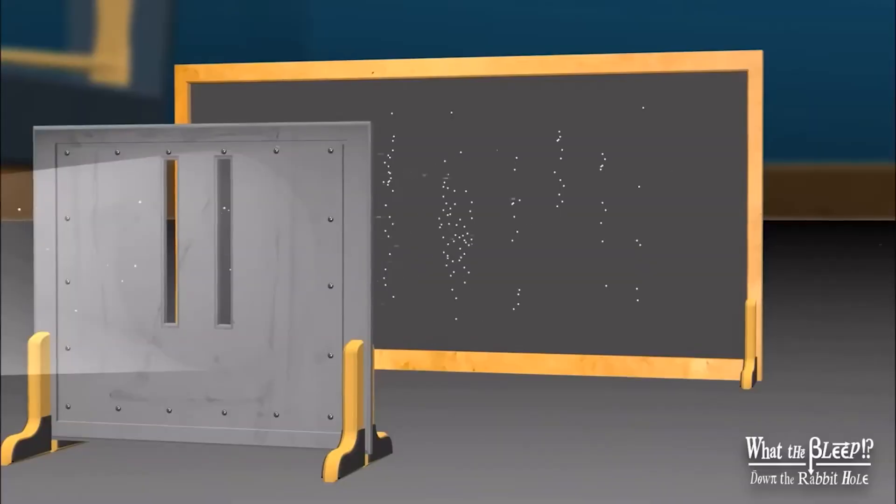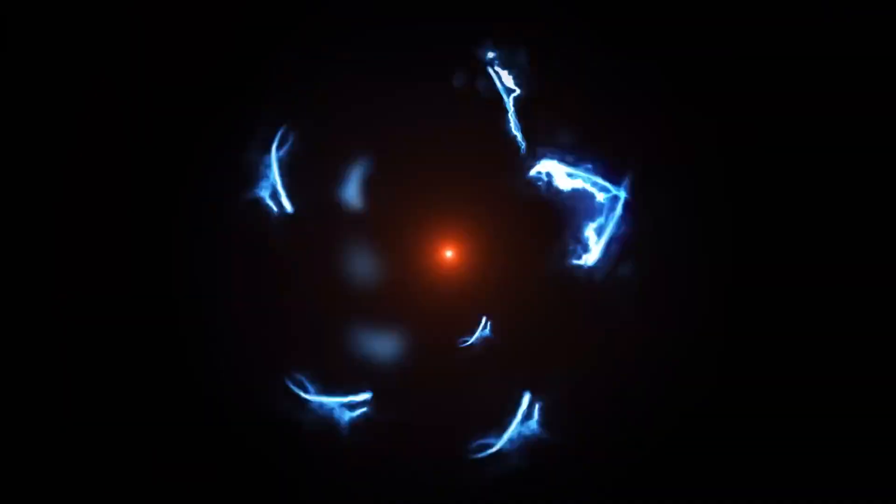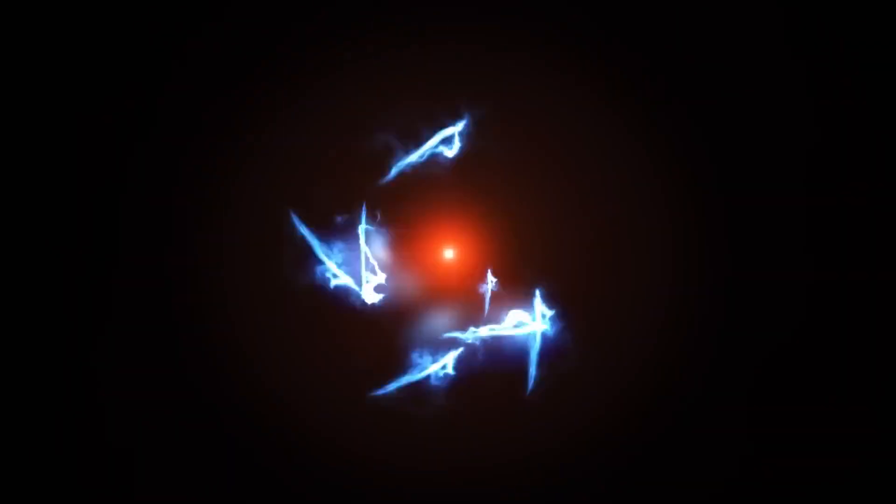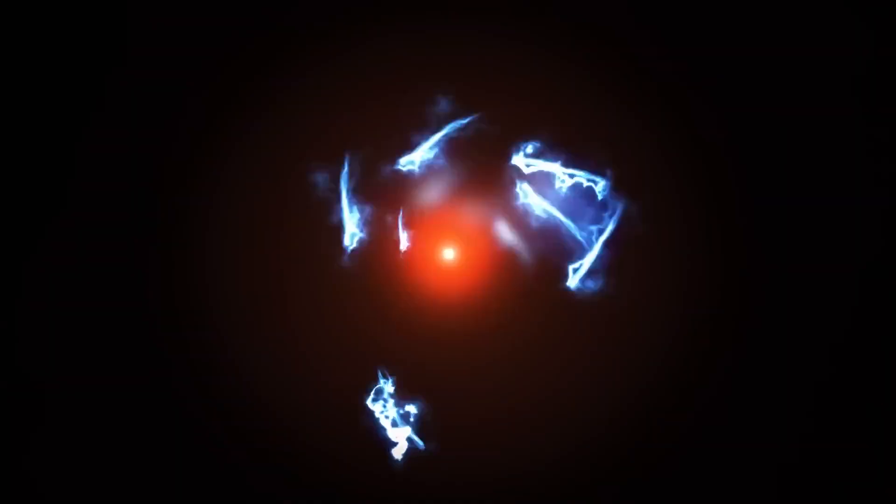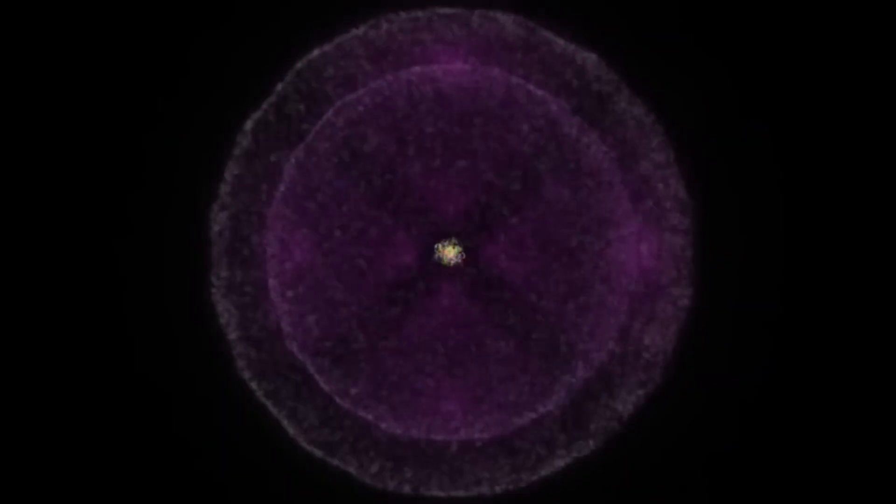This idea gained traction through something called the many-worlds interpretation of quantum mechanics. If you've heard of the double-slit experiment, you know that an electron behaves like a wave, existing in many places at once, until it is observed. Then, it collapses into a single position.